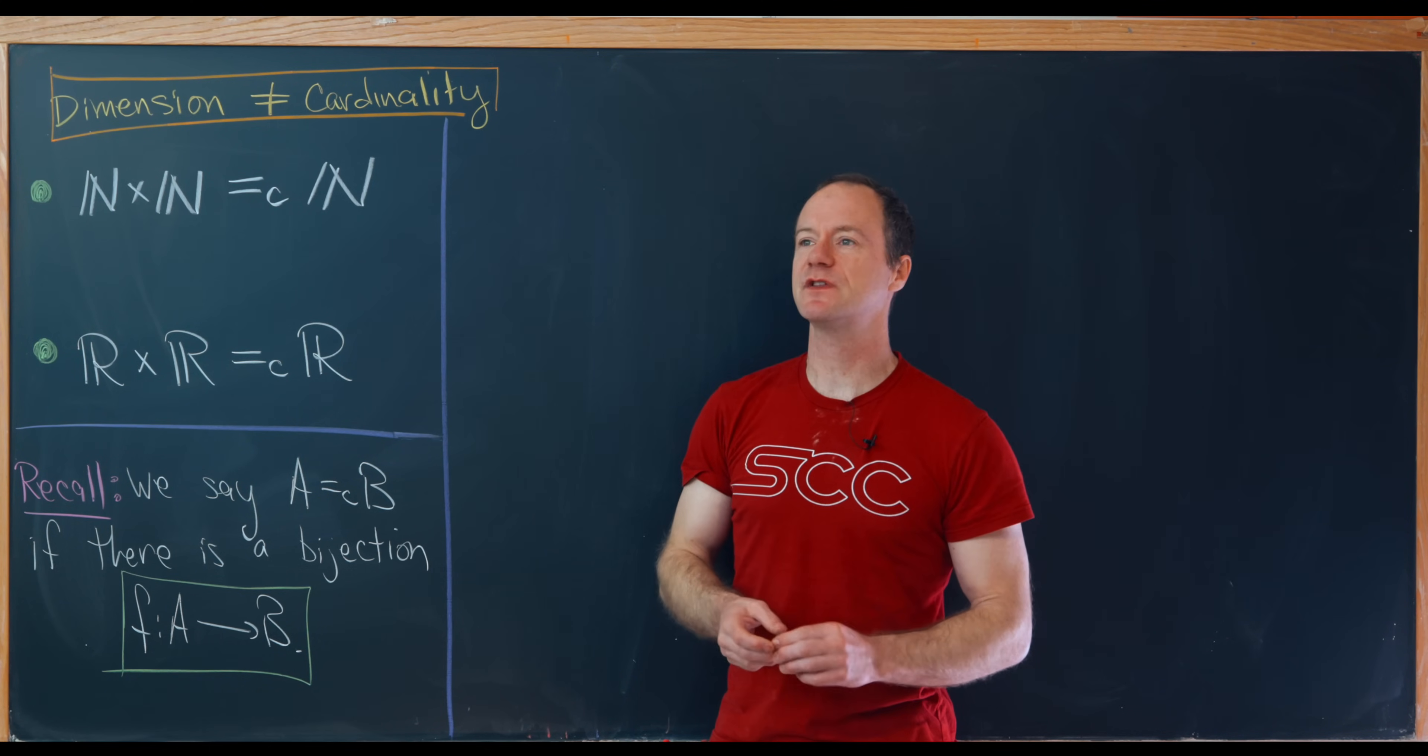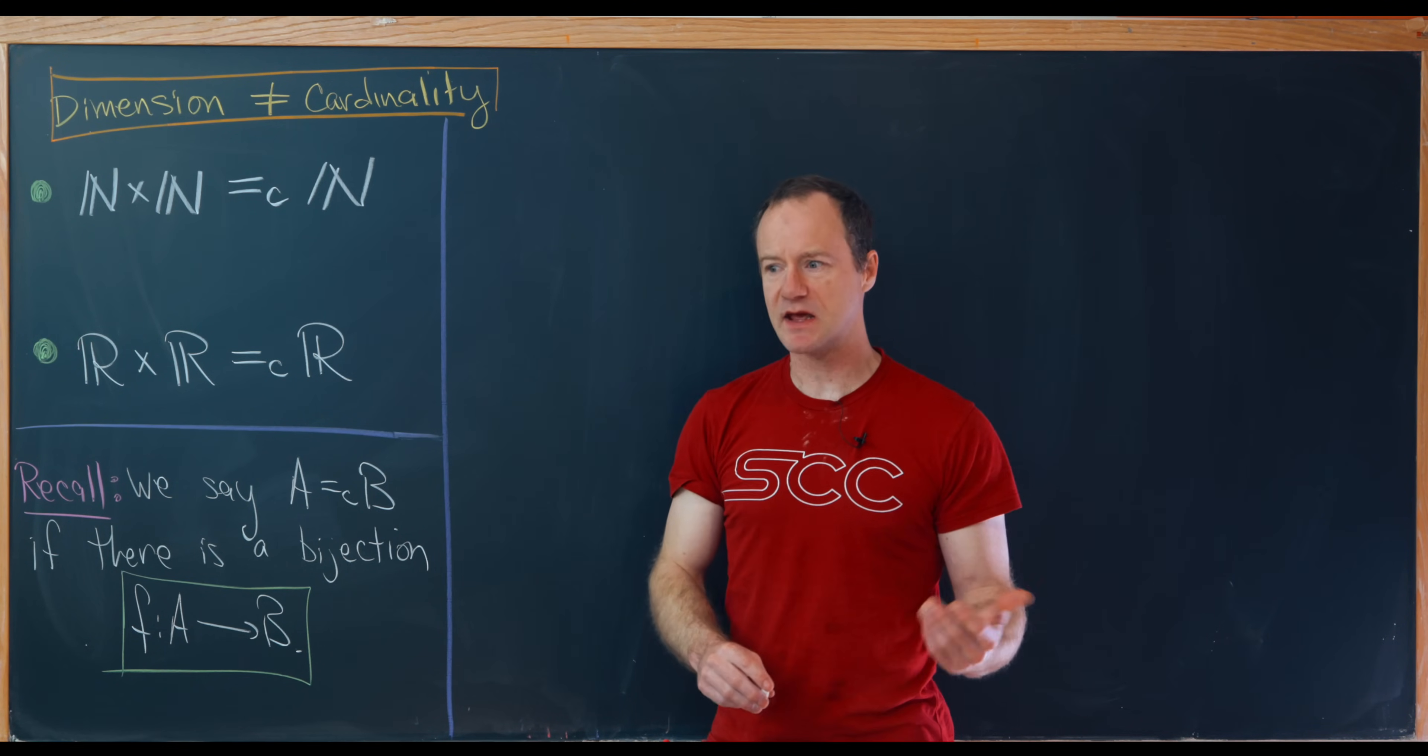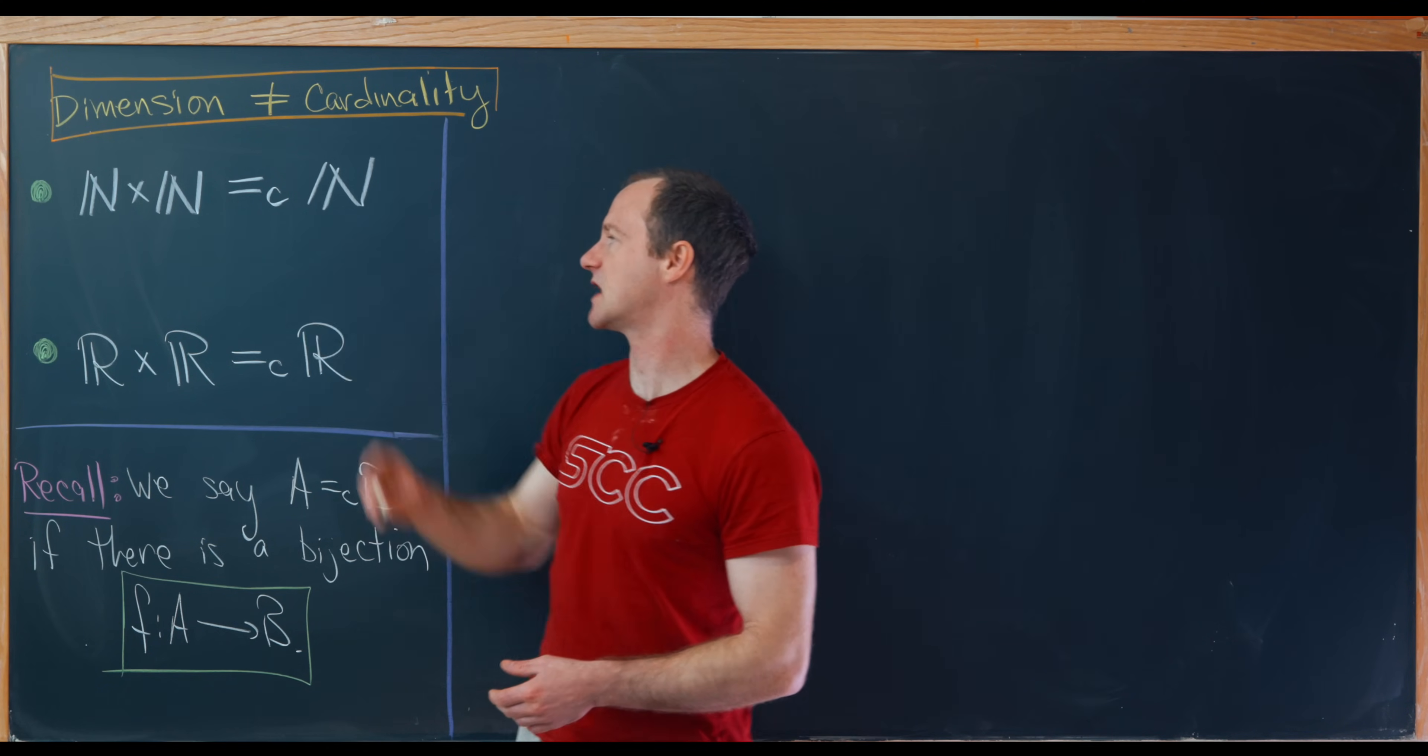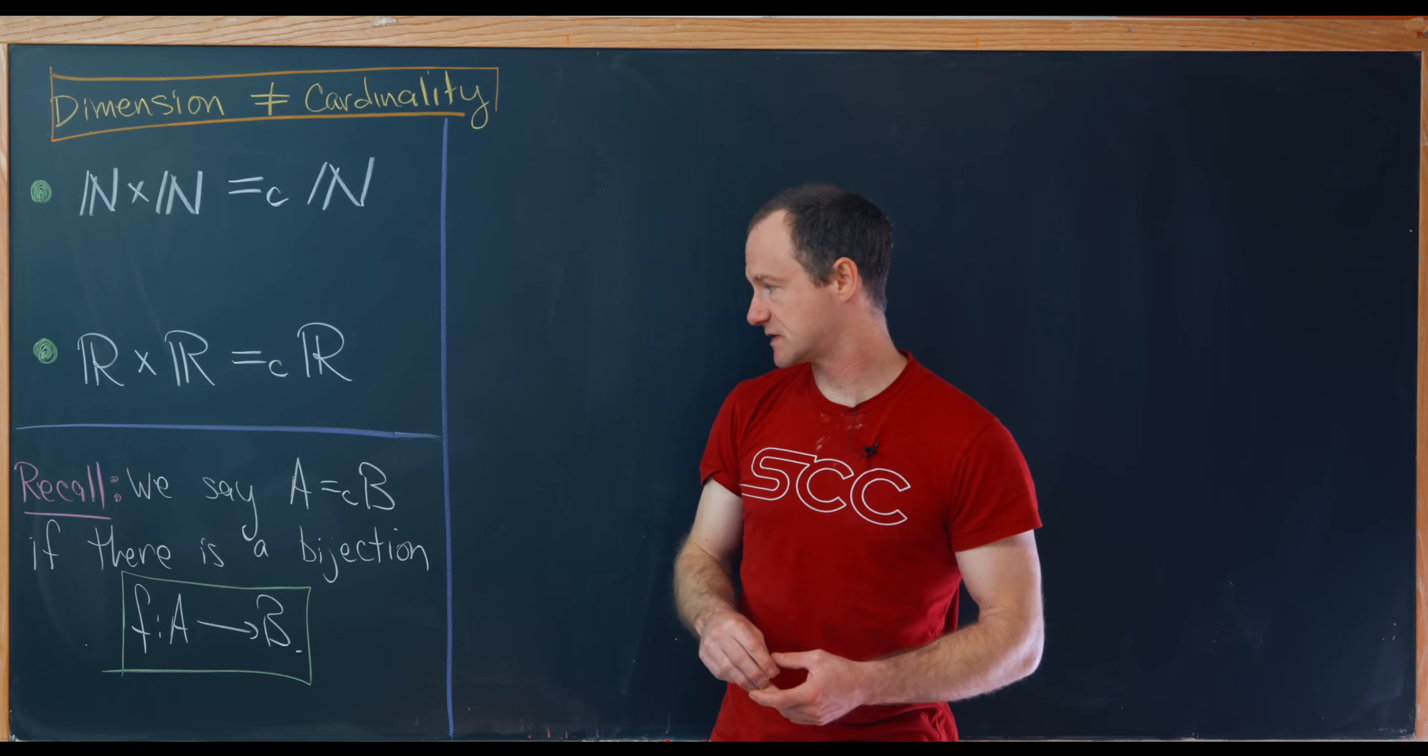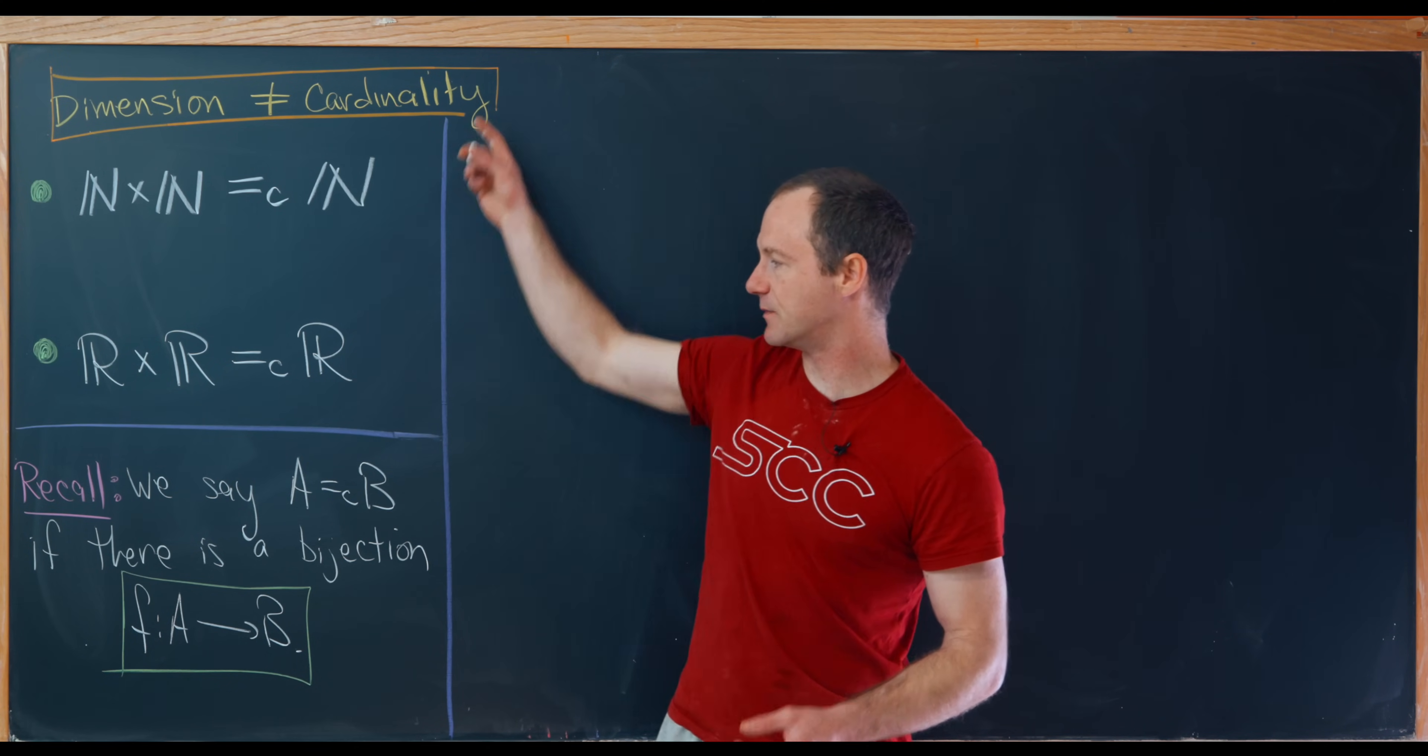We're going to do this with two examples. We will show that the cardinality of N cross N is the same thing as the cardinality of N, where by N I mean the natural numbers or the positive integers. So I'm using this notation with an equal sign and an underscore c to mean equal in cardinality or equinumerous. We'll also show that R cross R is equal in cardinality to R.